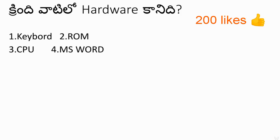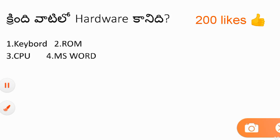First question: we have a question about hardware and software. The options are: keyboard, ROM, CPU, and MS Word. The answer relates to hardware and software.